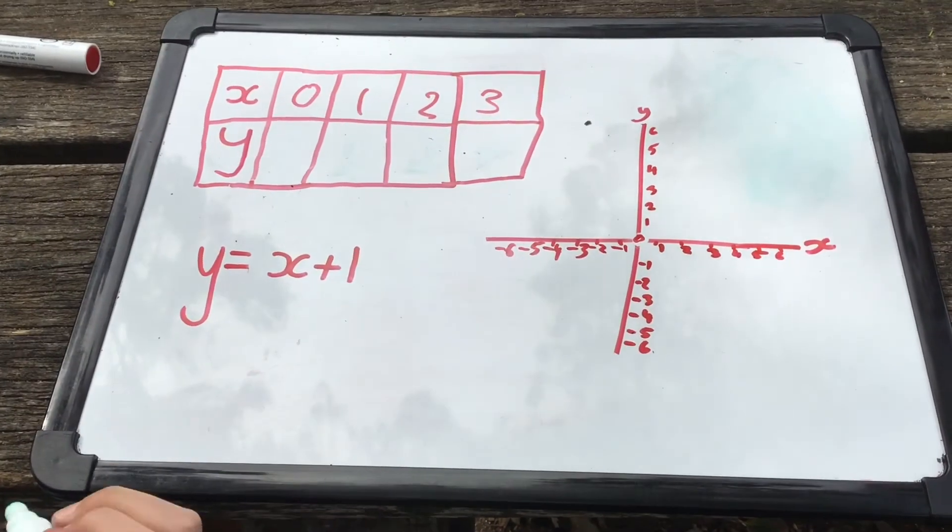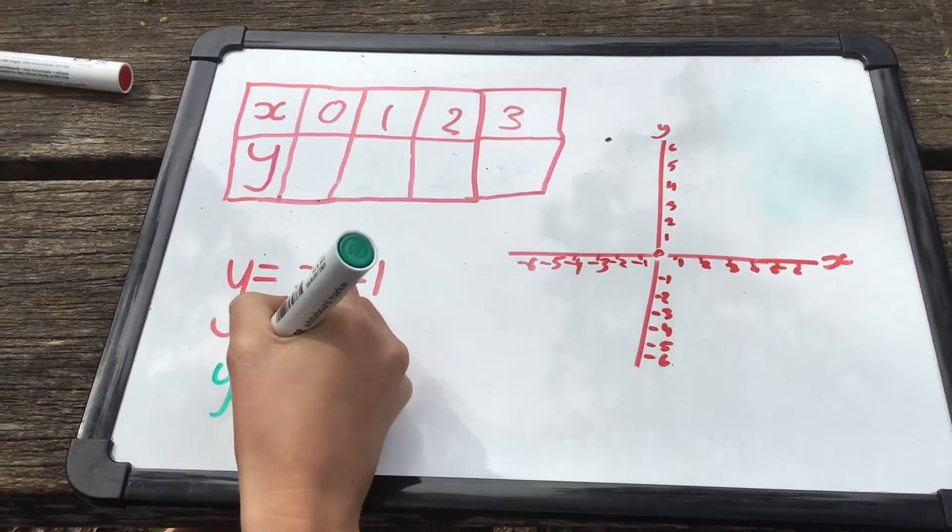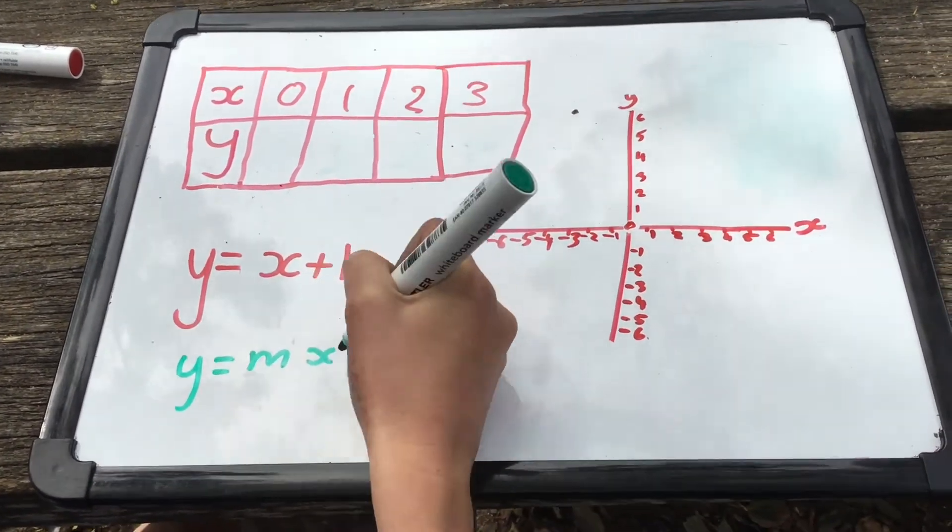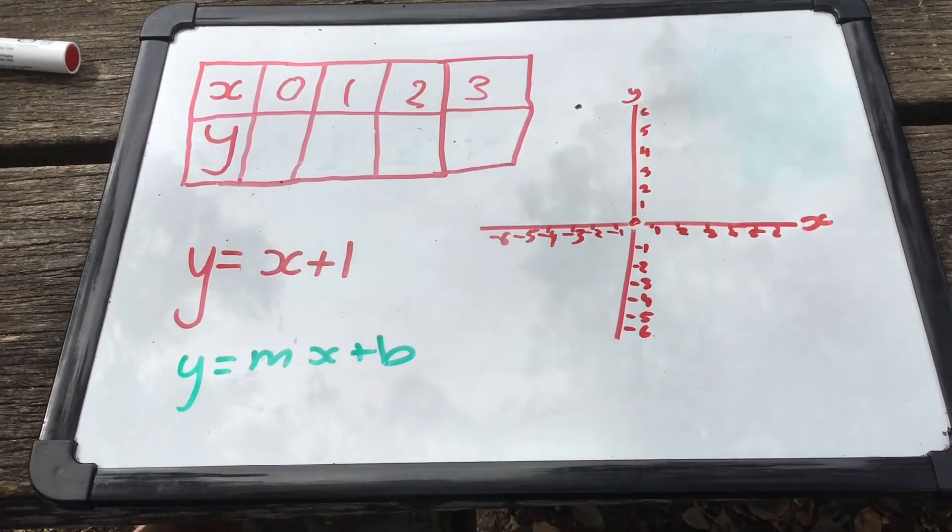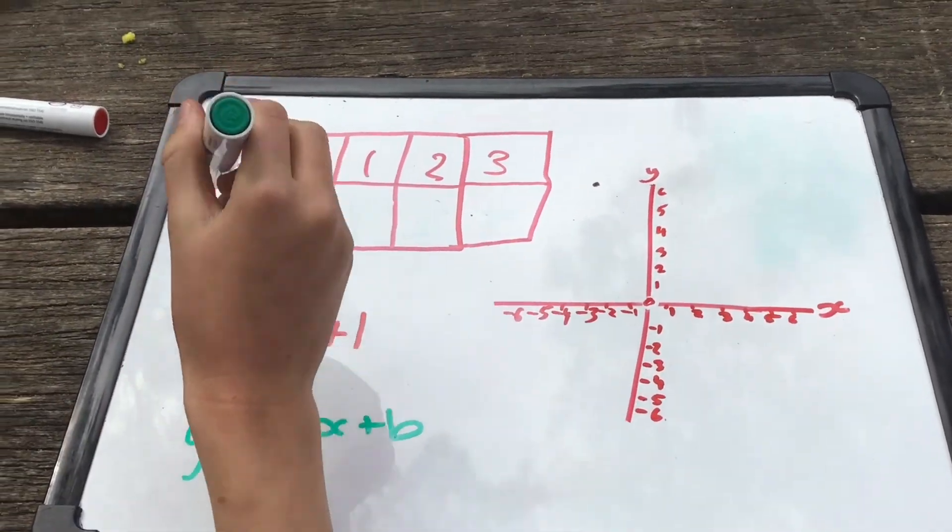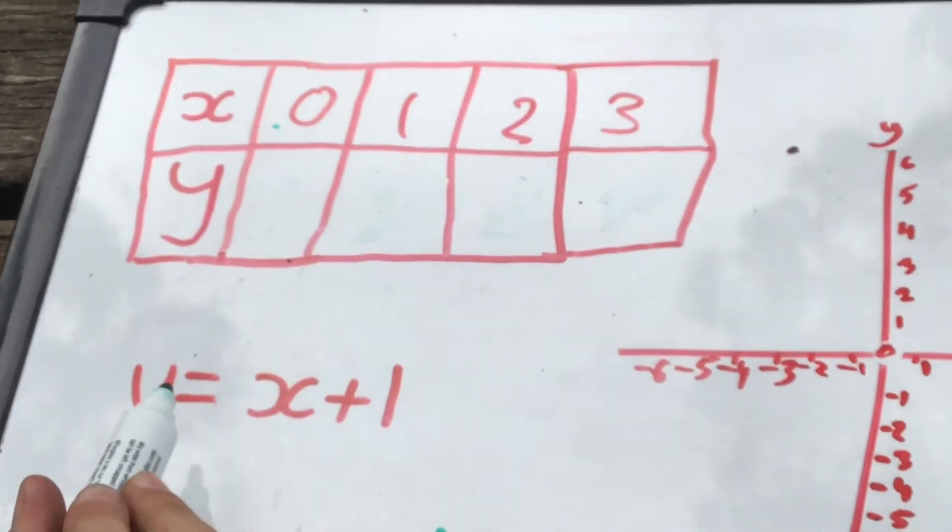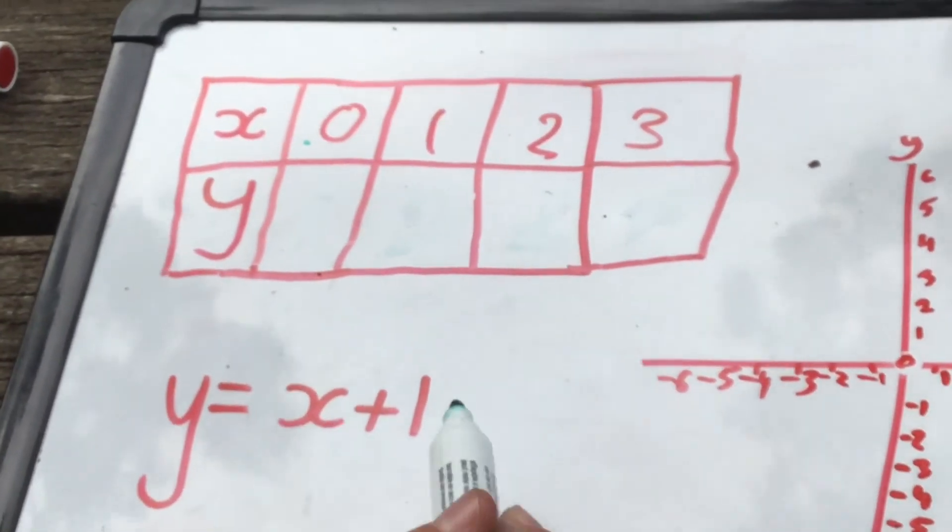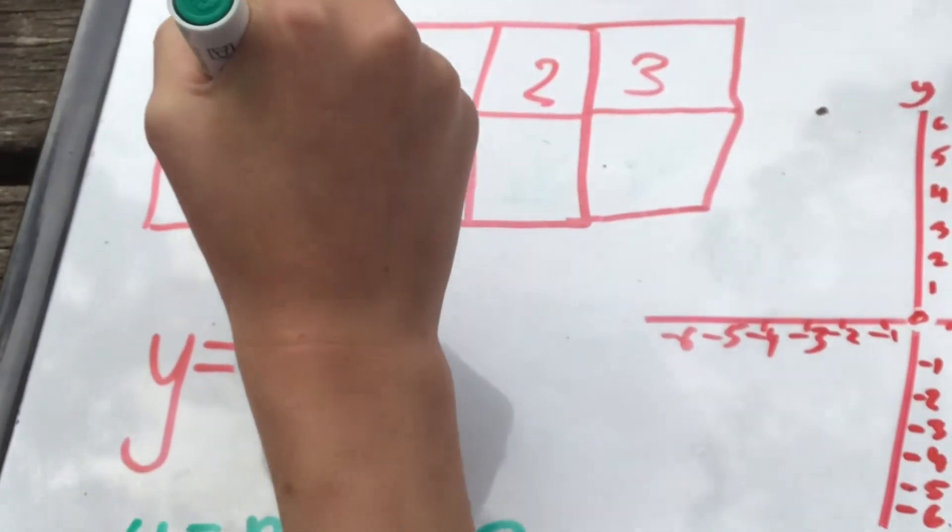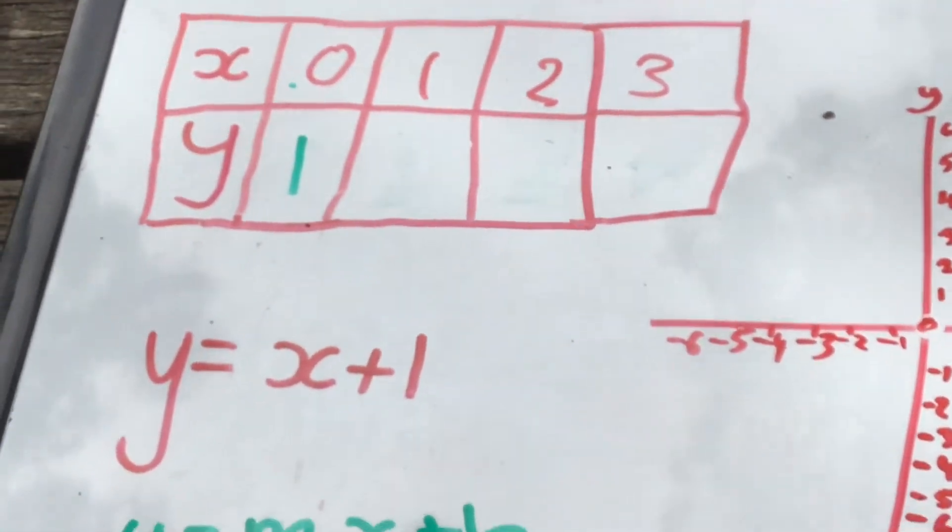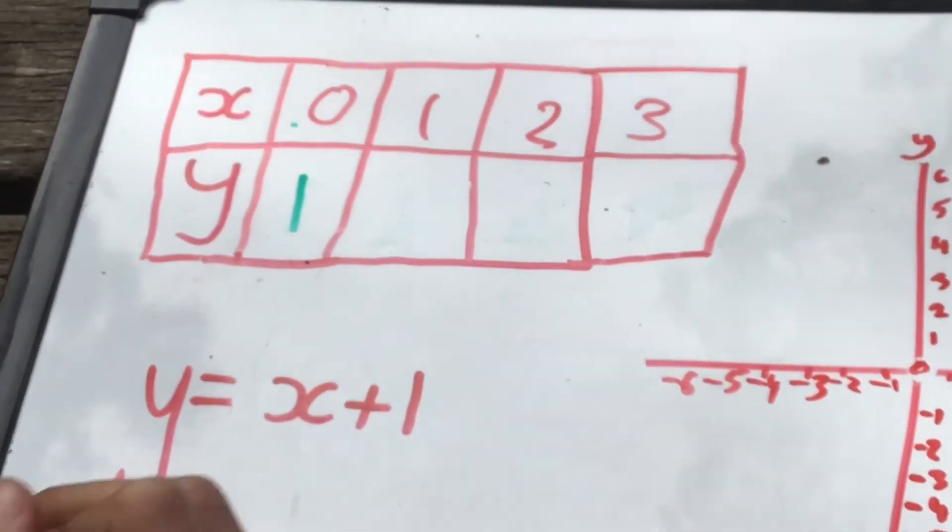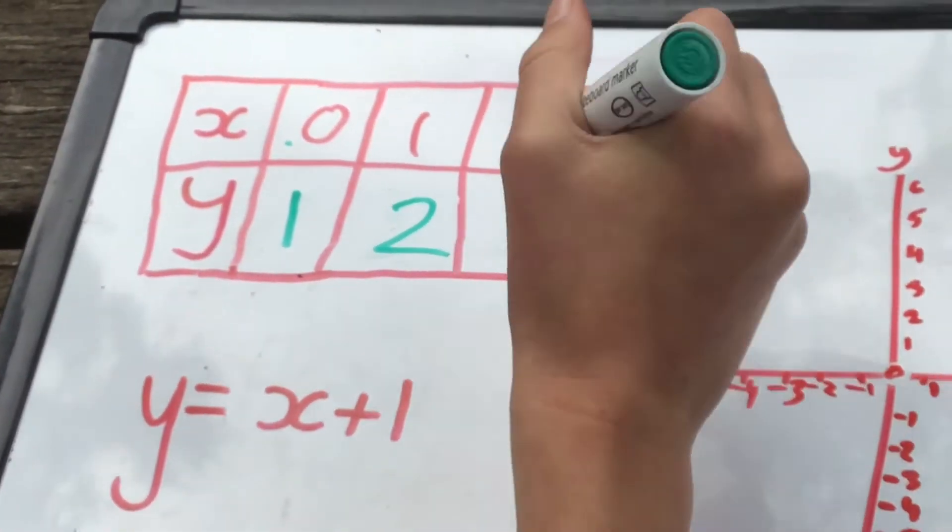The equation here is a linear equation where we use y equals mx plus b. This equation shows what x is compared to y. So, when x equals 0, y would equal 1, because 0 plus 1 equals 1. When x equals 1, y would equal 2, and so on for the numbers 2 and 3.